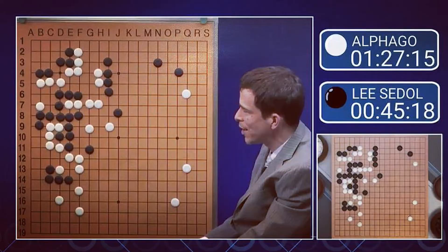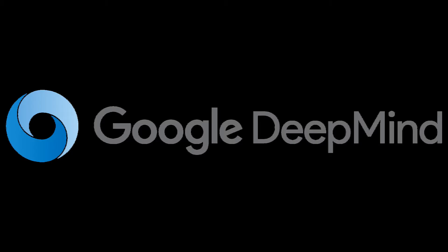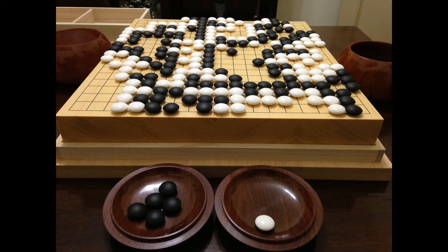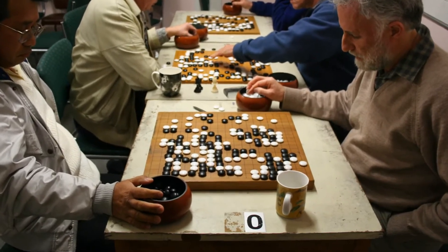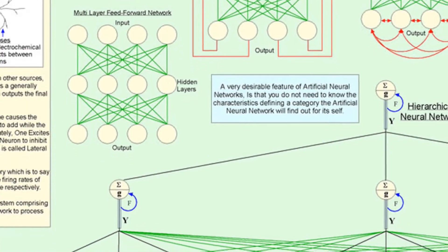Before we begin, let me tell you the difference between AlphaGo and AlphaGo Zero. AlphaGo is the AI developed by DeepMind, which is owned by Google, and it plays the game Go. AlphaGo was trained based on various games played by humans and then improved on itself by looking at those games and results. However, AlphaGo Zero was not given any human-played games — it was only given the rules of how to play, and then it played against itself and improved its model. Finally, when AlphaGo and AlphaGo Zero were put to compete with each other, AlphaGo Zero won all the games.